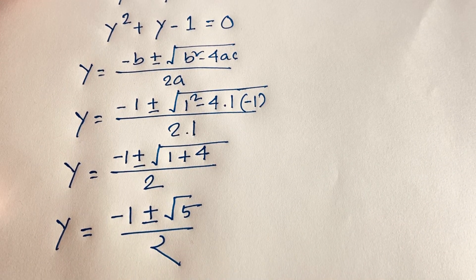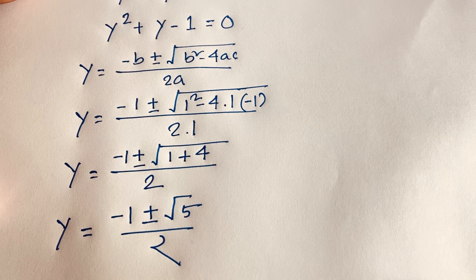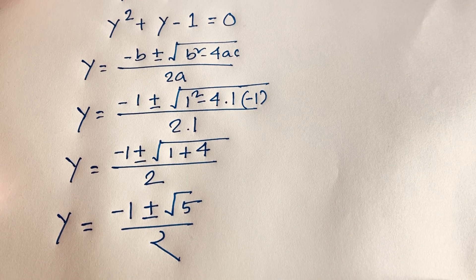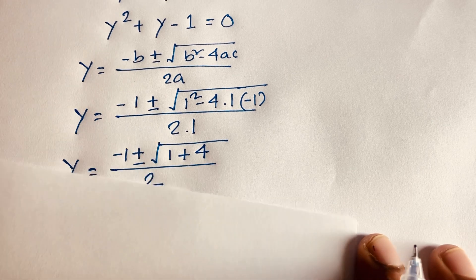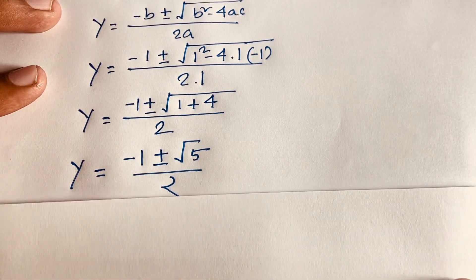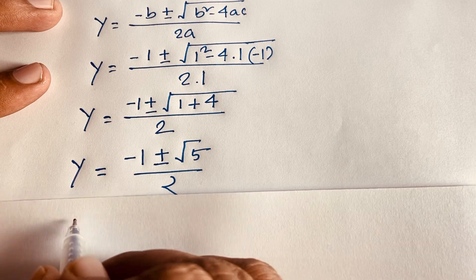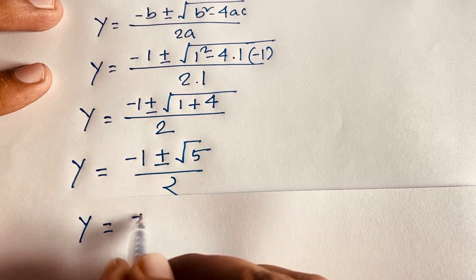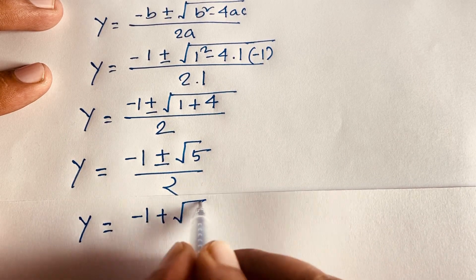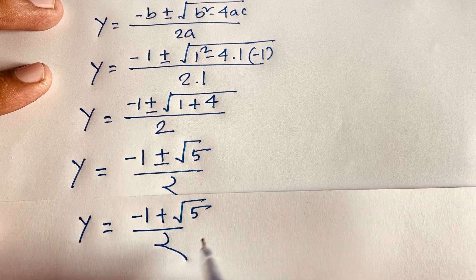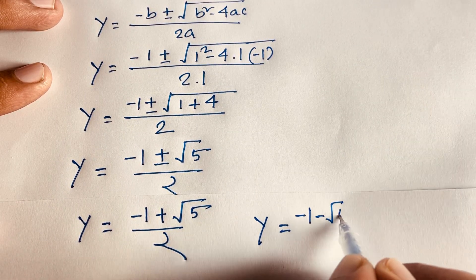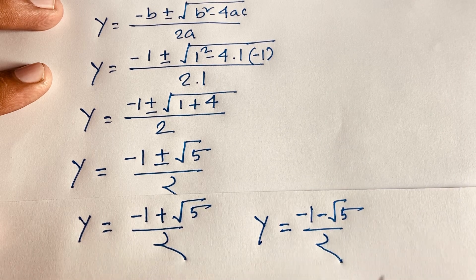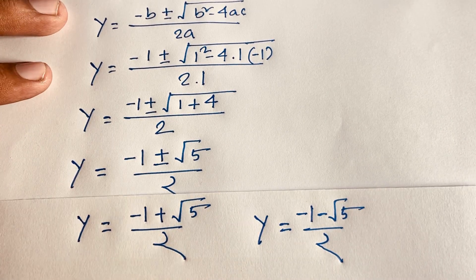We find two values: y equals (negative 1 plus square root of 5) over 2, and y equals (negative 1 minus square root of 5) over 2.